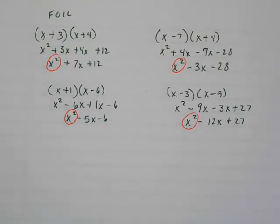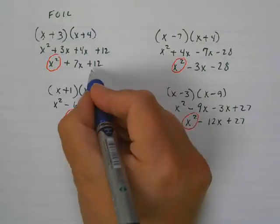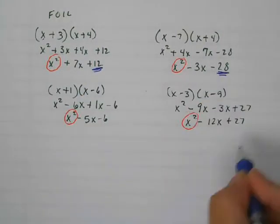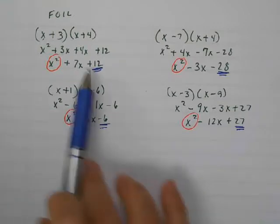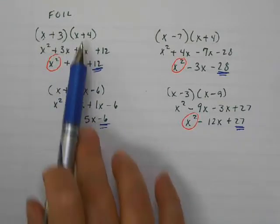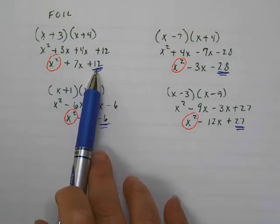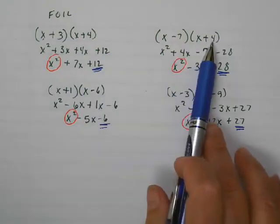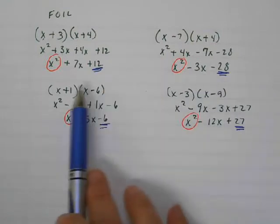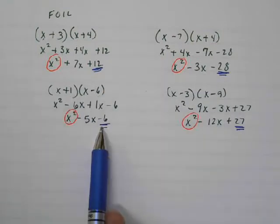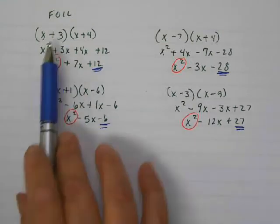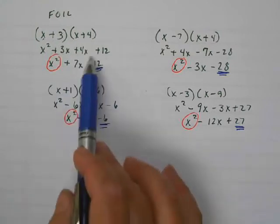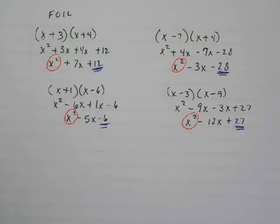Something else you might have noticed is this number. Every time, this number ends up being found the same way. For instance here, if you look at the number 3 and the number 4, when you multiply those together, you always get 12. Here when you multiply negative 7 times 4, you get negative 28. Positive 1 times negative 6 is negative 6. Negative 3 times negative 9 is positive 27. So when I have two binomials, this last term is always found by multiplying these two numbers together.